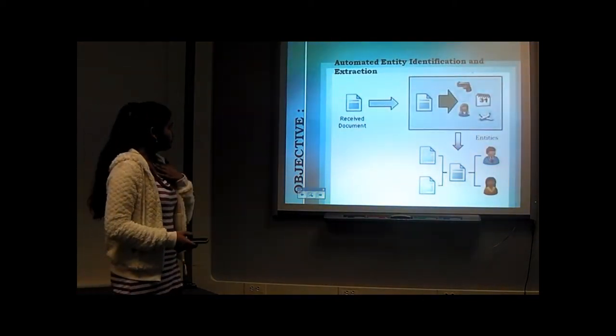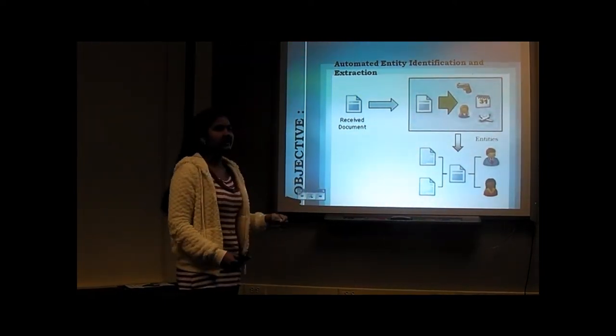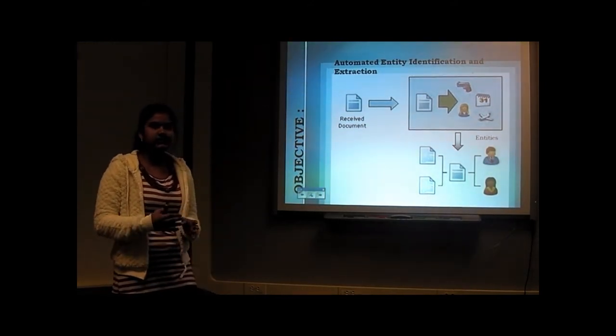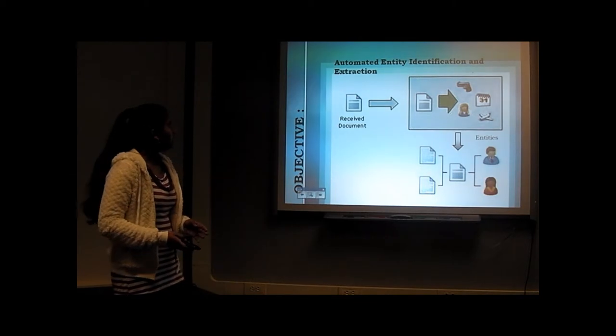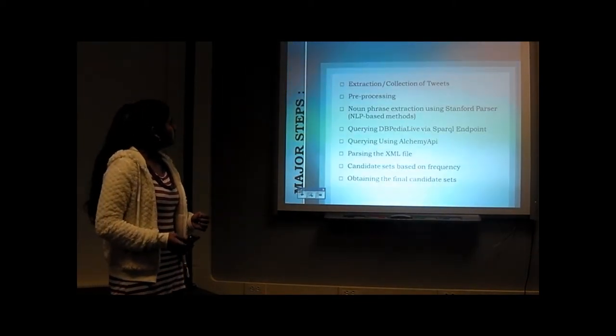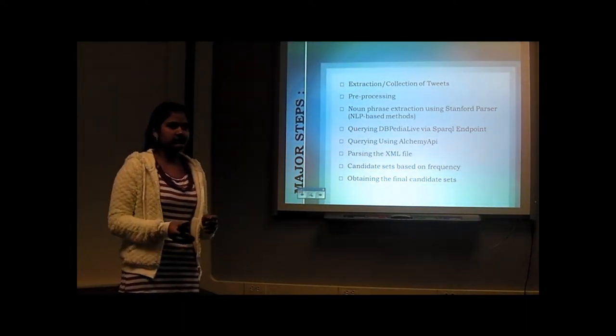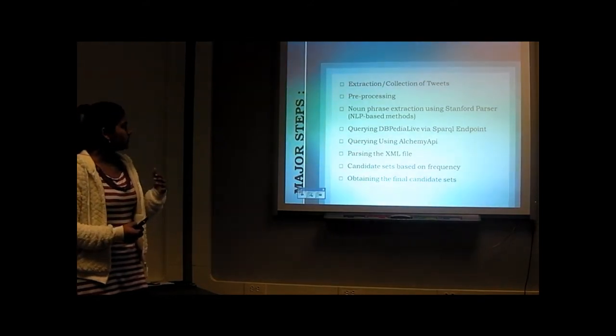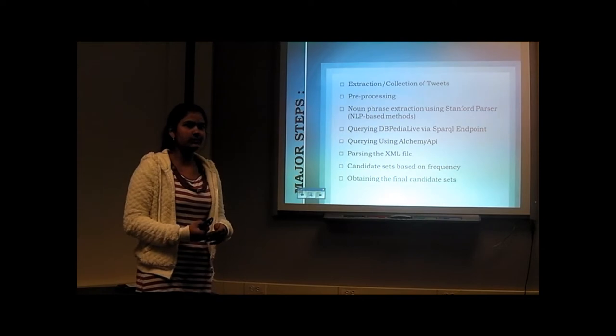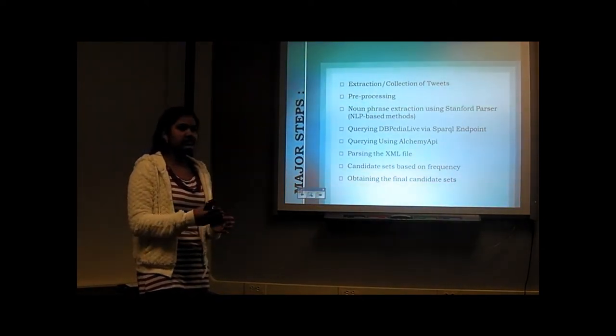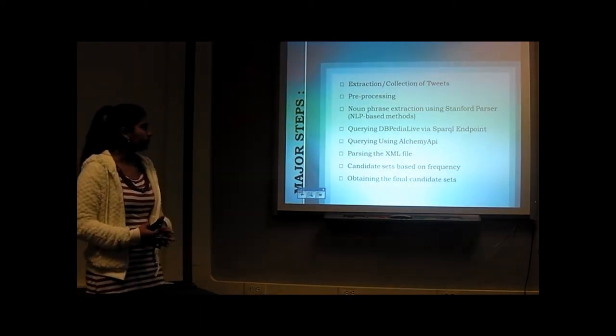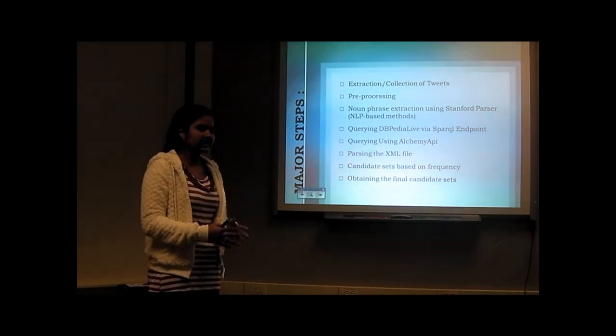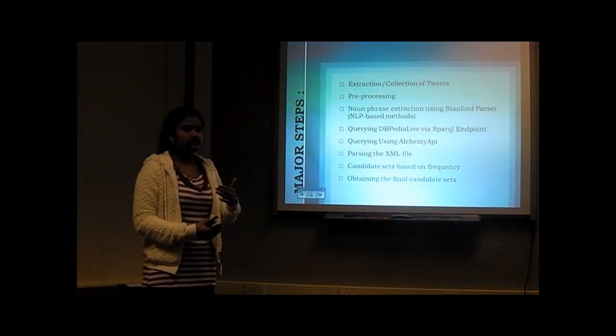So I started with, my major objective was to first extract the mentions of all the entities from my tweet corpus, and then remove the spurious entities out, and just filter the ones that were related to the specific event, in an automated way. So for my initial work, I just started with a collection of nearly thousand tweets on the event called India Against Corruption, and just after the pre-processing, obtained a list of the noun phrases using the Stanford parser, and it served as a kind of preliminary candidate set for me to work upon.